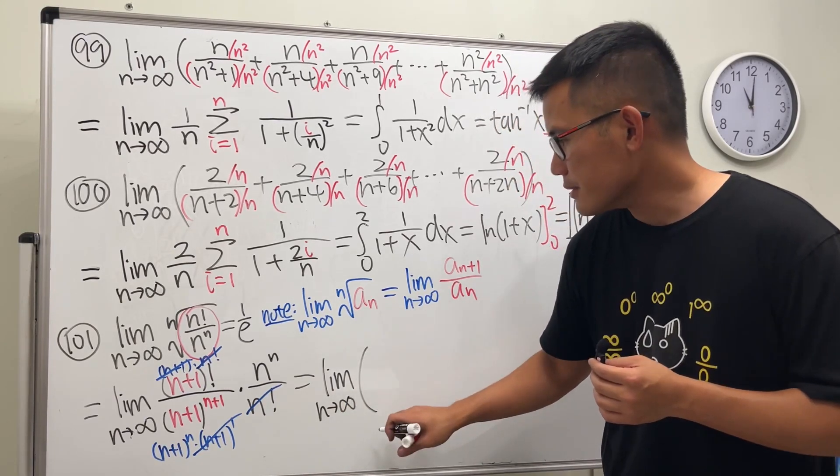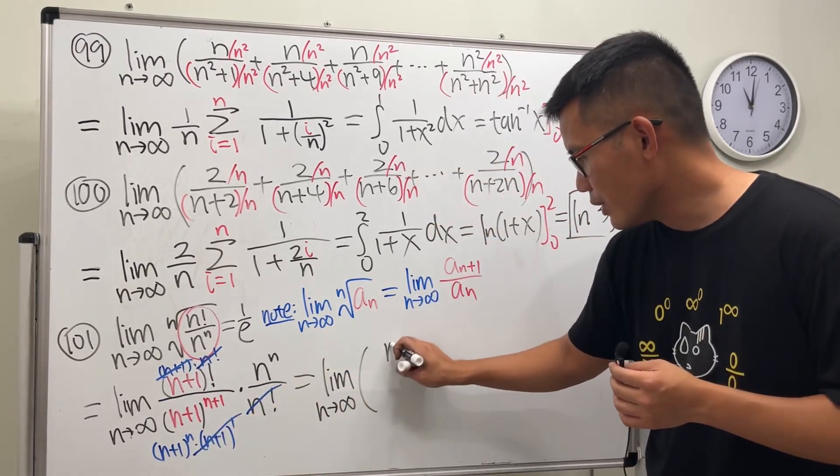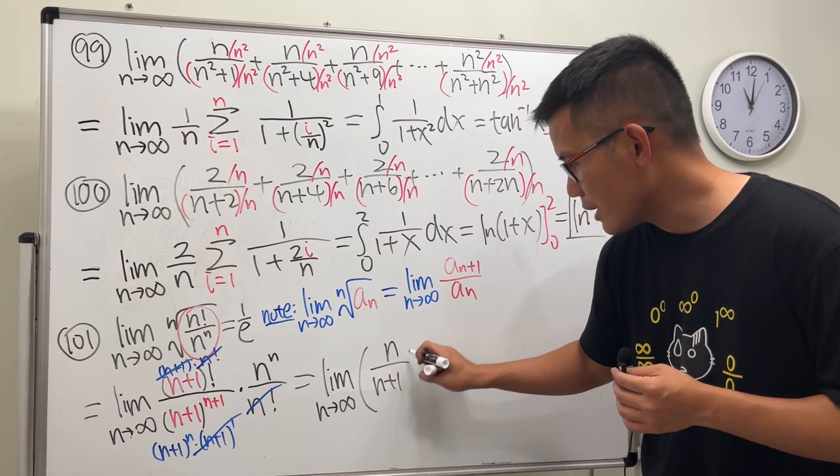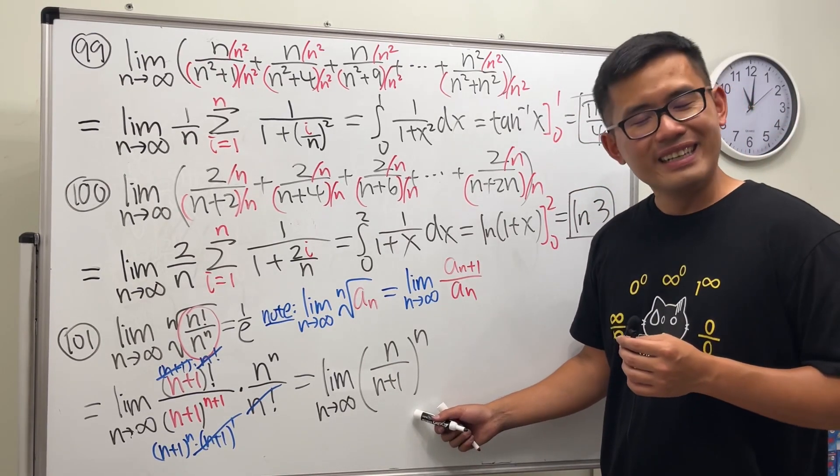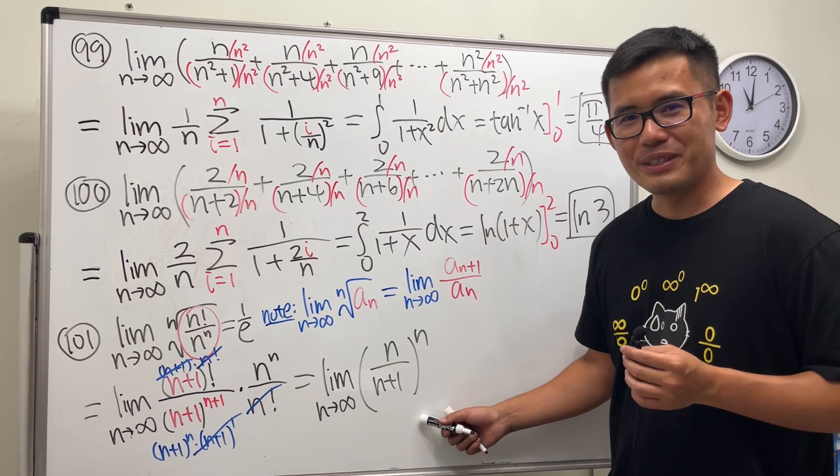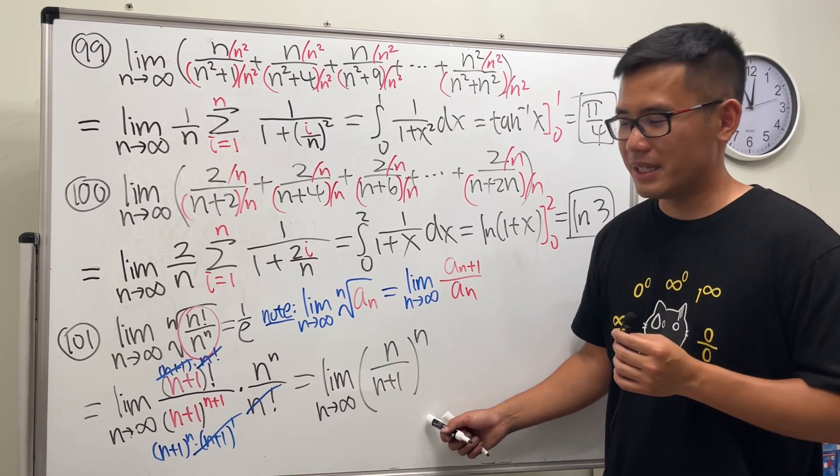n goes to infinity, n over that, so n over n plus 1 raised to the nth power. Now how do we do this? We have done something similar like this, right? Yes, the secret weapon.